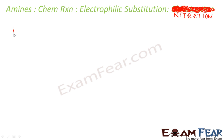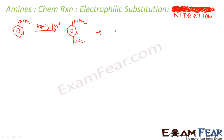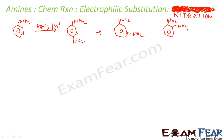The next reaction is nitration. I need HNO₃ and H₂SO₄. What I get is a mixture of ortho, meta, and para products. The major product is NO₂ at the para position — about 51%. The next is NO₂ at the ortho position — about 47%. The meta product is rare at only about 2%, consistent with NH2 being an ortho and para-directing group.